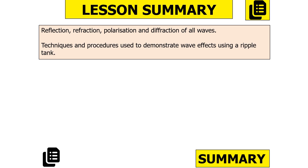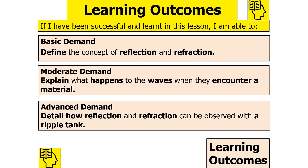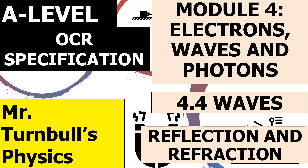To summarize, in today's lesson we've looked at reflection and refraction of all waves and the techniques and procedures used to demonstrate these wave effects using a ripple tank. We should now be able to define the concepts of reflection and refraction, explain what happens to waves when they encounter a material, and detail how reflection and refraction can be observed with a ripple tank. Thank you for watching this lesson on reflection and refraction, part of the waves topic in Module 4, Electrons, Waves and Photons for OCR A Level Physics.